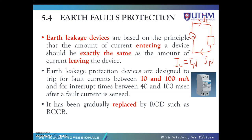Earth leakage protection devices are designed to trip for fault currents between 10 and 100 milliamps. If the device detects that IL is not equivalent to IN, then it will trip. The sensitivity for earth leakage protection devices is between 10 and 100 milliamps, and fault interrupted times between 40 and 100 milliseconds after a fault current is sensed. This has been gradually replaced by RCD such as RCCB — the residual current circuit breaker.